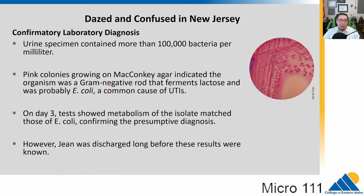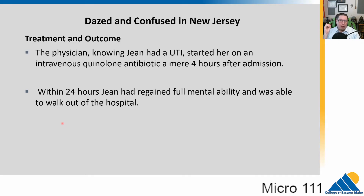They grow these on a selective plate — MacConkey agar — and find a gram-negative rod that ferments lactose, so it looks like E. coli, which is a common cause of UTIs. On the third day, all the metabolic tests confirm it's E. coli. By that point they've already given her antibiotics and released her. She recovers within hours — within 24 hours she's back to normal and out of the hospital walking under her own power. That's the magical thing about antibiotics: they work very rapidly.